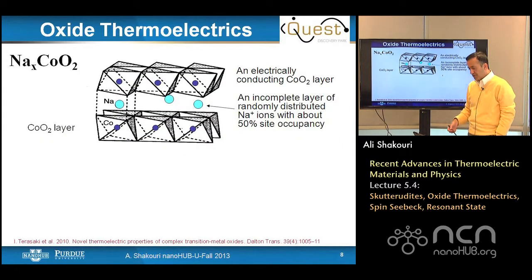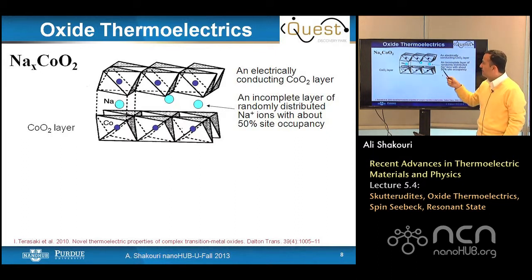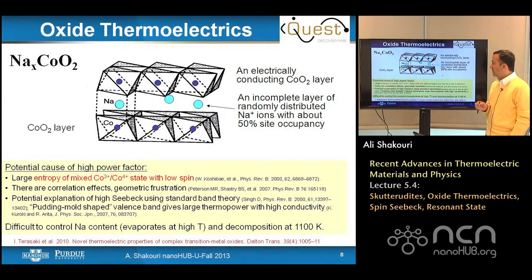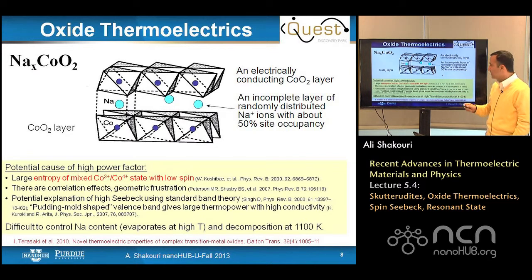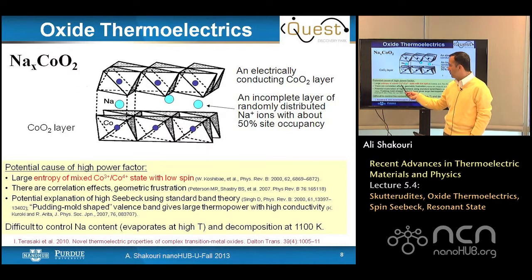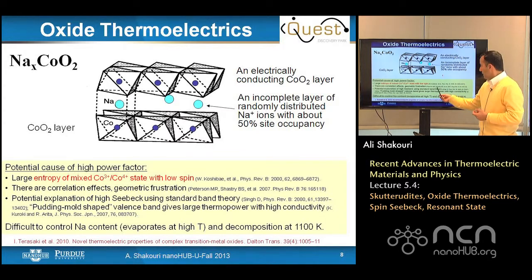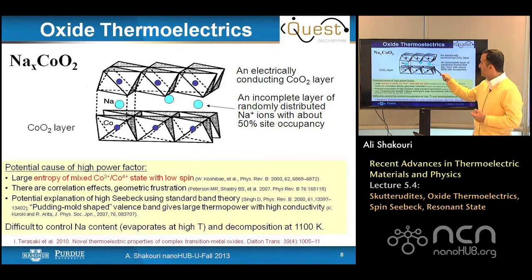The crystal structure of sodium cobalt oxide has a conducting cobalt oxide layer sandwiching an incomplete layer of randomly distributed sodium ions with 50% site occupancy. The large power factor is not completely understood. Koshibaya and others mention spin entropy — cobalt 3+ and 4+ states where electrons carry spin entropy in addition to diffusion entropy. Sriram Shastry and others mention correlation effects and geometrical frustration in the triangular lattice, while David Swink argues the high Seebeck can be explained using standard band theory.